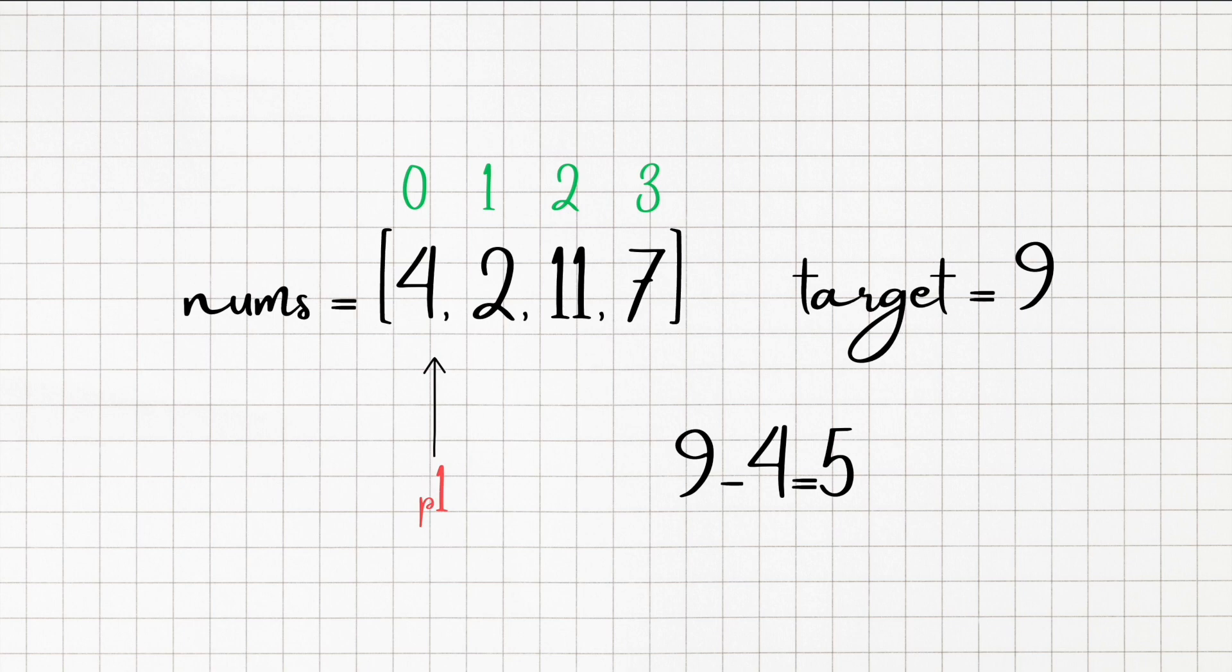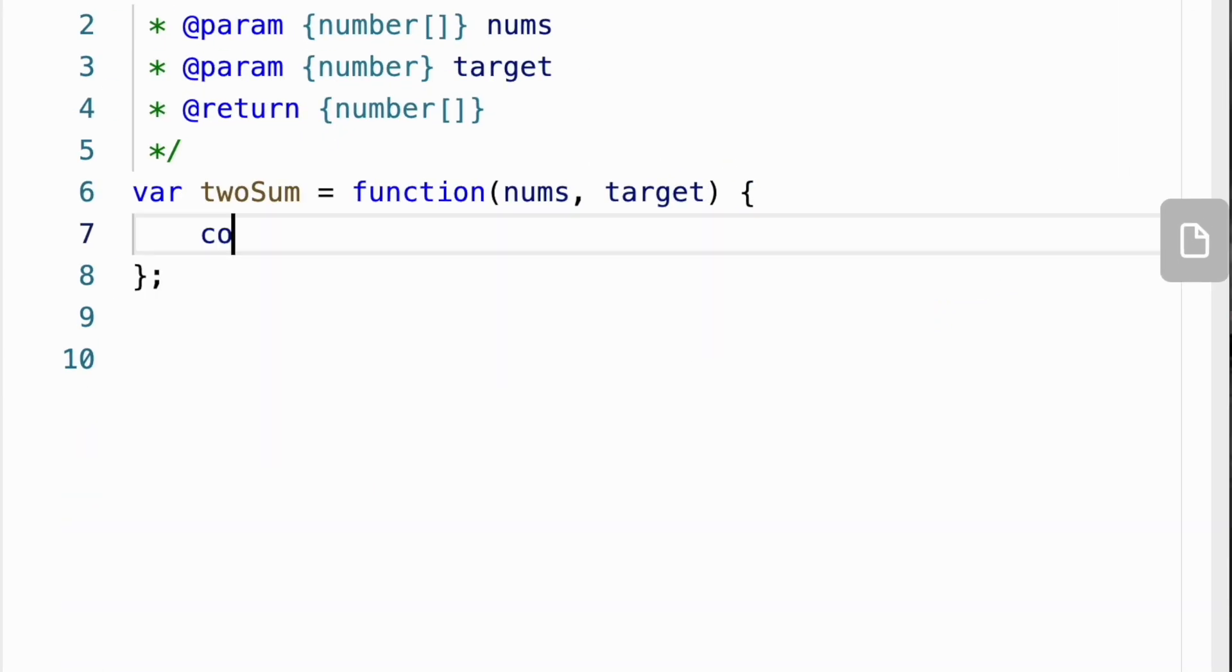Also known as objects in JavaScript. We can loop through this array and store the numbers we have already seen as keys and their indices as values. This way we can easily check if the complement of the current number exists in the hashmap.